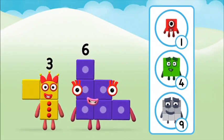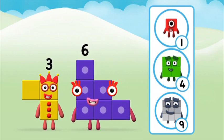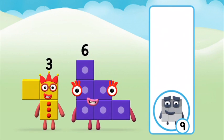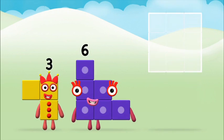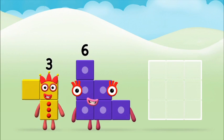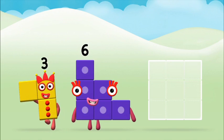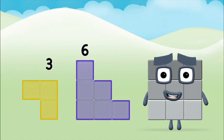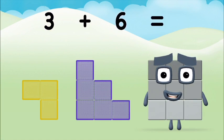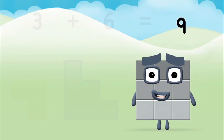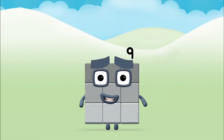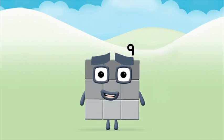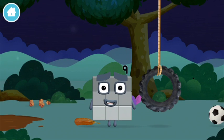What number block can you make by adding these two together? Great! Add the number blocks together! Six, three, three plus six equals nine! Brilliant! You made number block nine!